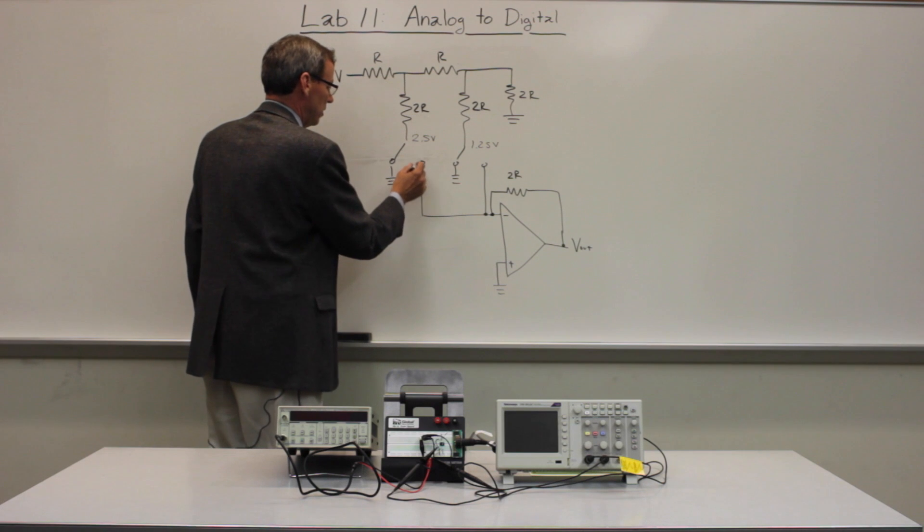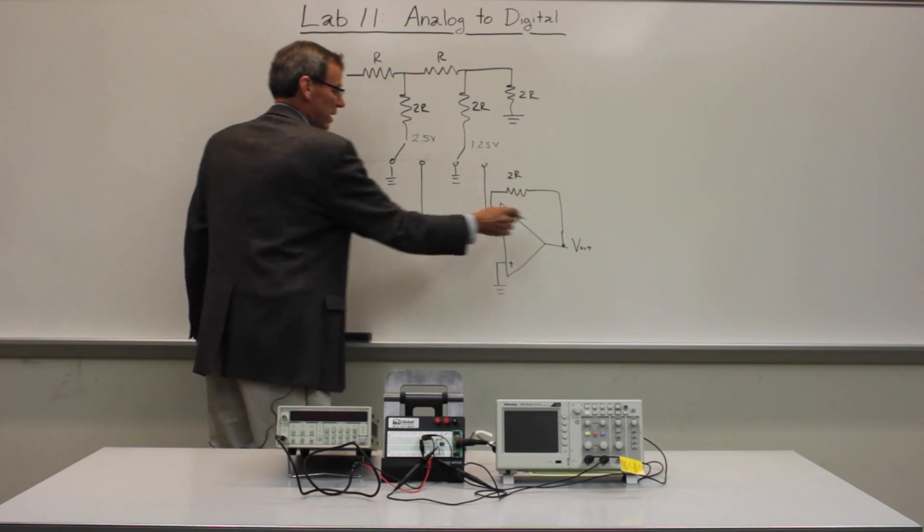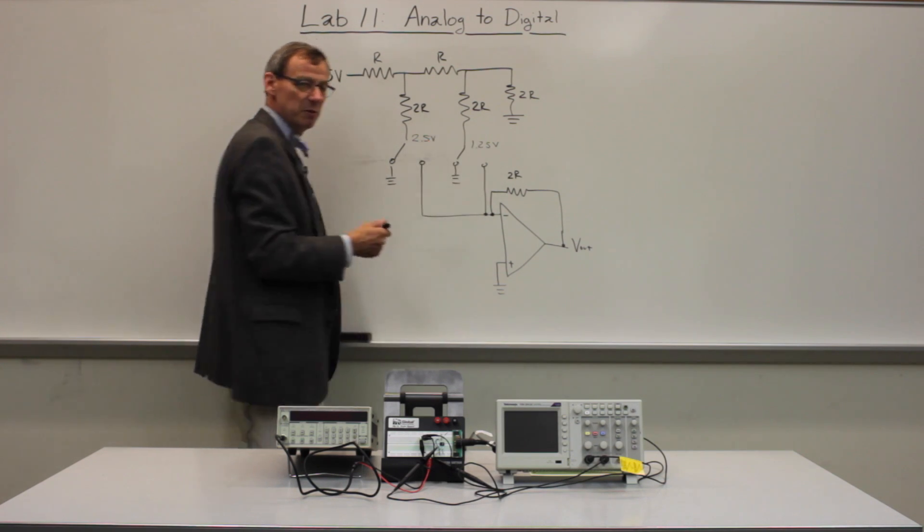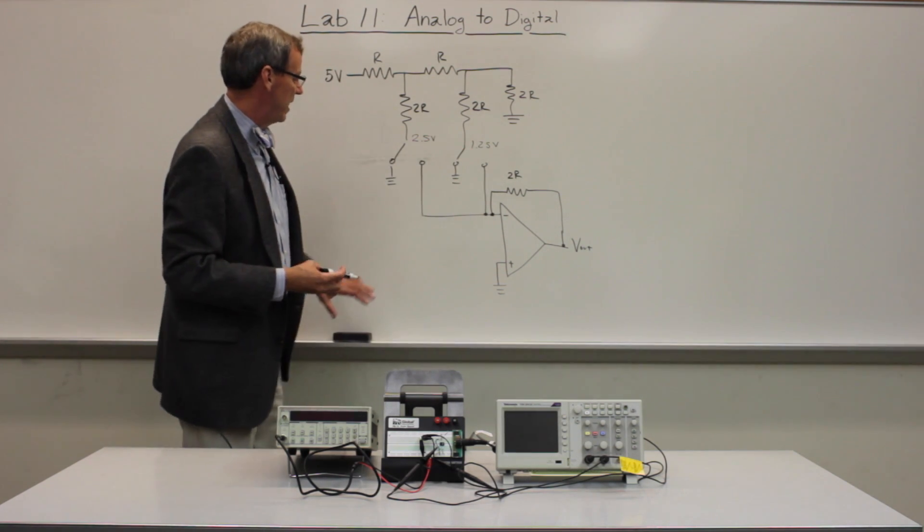So if we put this into the circuit here, then we get 2.5 volts, then we'll get minus 2.5 volts out. We click this one in as well, we'll get the sum of those two. So that's the idea of this Adder circuit.